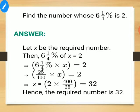Next question: find the number whose 6 and 1/4 percent is 2. The percentage is given as a mixed fraction. First convert the mixed fraction into an improper fraction. Let the required number be x. Then 6¼ percent of x equals 2. Convert the mixed fraction to improper first, then remove the percentage sign — the number is multiplied by 1 upon 100, giving 25 upon 400 multiplied by x equals 2. Do cross multiplication and cancel to get 32.